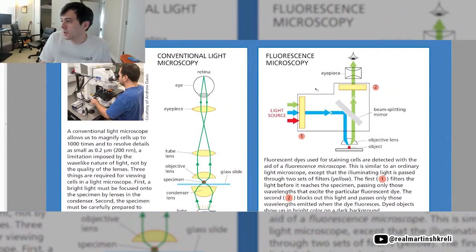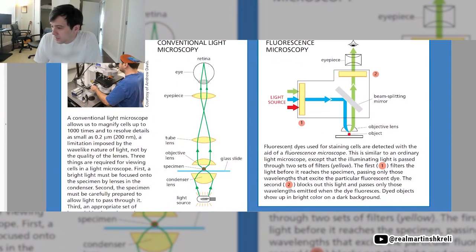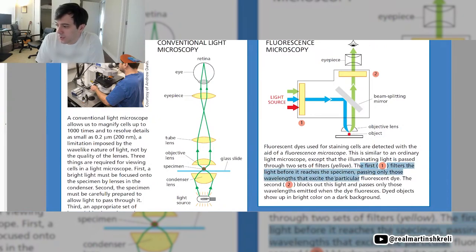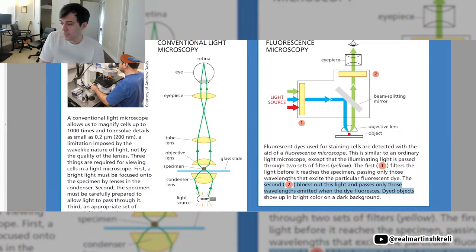Let's look at fluorescence microscopy. We have an eyepiece, a light source, and then a beam splitting mirror, an objective lens, and the specimen. Fluorescent dyes used for staining cells are detected with the aid of fluorescence microscope. This is similar to an ordinary light microscope, except that the illuminating light is passed through two sets of filters. The first filters the light before it reaches the specimen, passing only those wavelengths that excite the dye. The second blocks out this light and passes only the wavelengths emitted when the dye fluoresces. Dyed objects show up in bright color on a dark background.